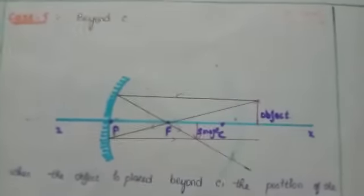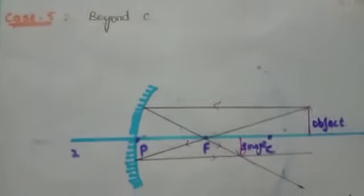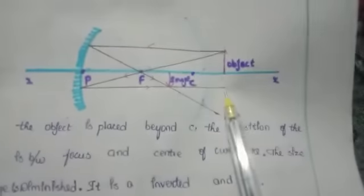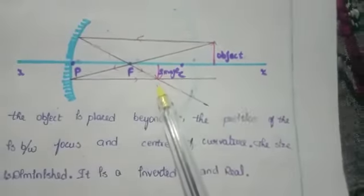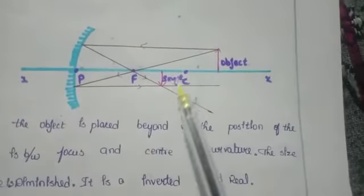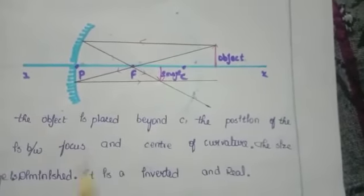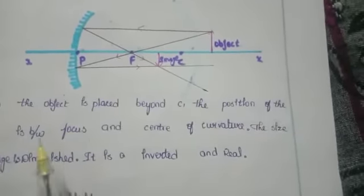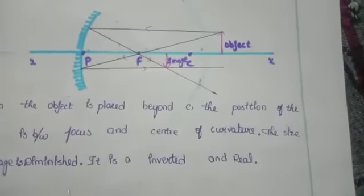See here, 5th case: when the object is placed beyond C. See here, it is the ray diagram of concave mirror case 5. The object is placed beyond C. This is the center of curvature — the object is placed beyond it. The ray will be parallel to the principal axis and pass through the focus, and another ray passes through the focus and parallel to the principal axis. The image will form between focus and center of curvature. The image size is small. When the object is placed beyond C, the position of image is between focus and center of curvature. The size of image is diminished. It is an inverted and real image.